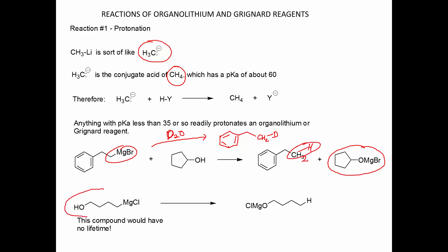What about this Grignard reagent here — could it exist? Well, it can't, because it would have absolutely no lifetime. The very instant it's formed, within a nanosecond, we would find that this acidic hydrogen basically transfers itself over, and we would end up with a compound that doesn't have any carbon anion character at all. We would just end up with a magnesium alkoxide of 1,2-n-butyl alcohol, and we would not get any of the Grignard-type reactions.